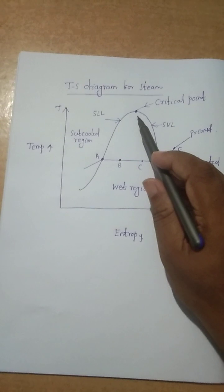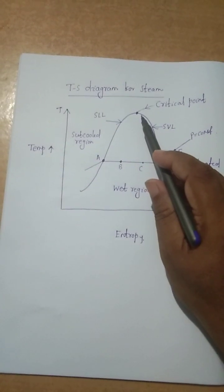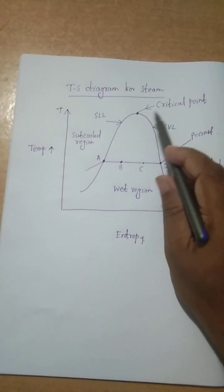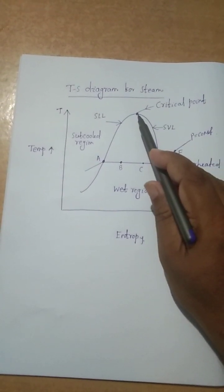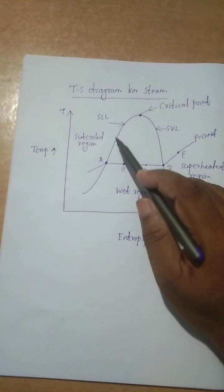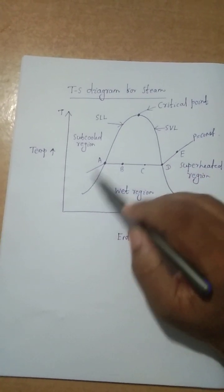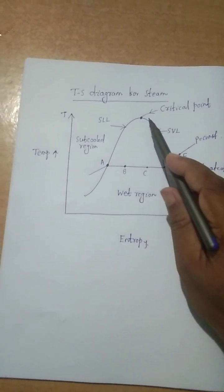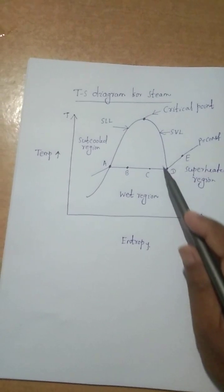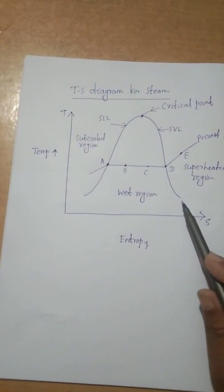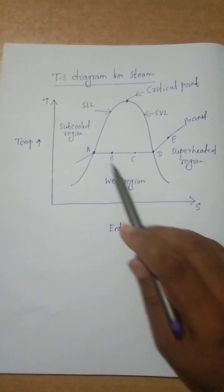The topmost point is known as the critical point. From the critical point, the left side line is known as the saturated liquid line, and from the critical point the right side line is known as the saturated vapor line.